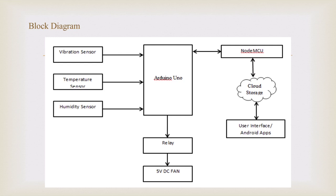For the block diagram, the sensors — vibration, temperature, and humidity — will be connected to the Arduino, and the data from the sensors will be sent to the cloud through the NodeMCU. The relay is used to switch on and off the 5V DC fan.